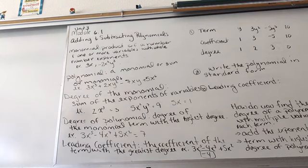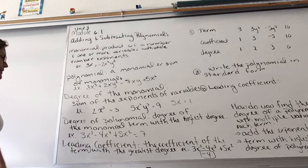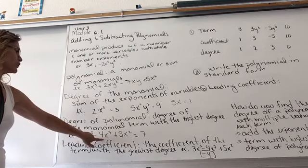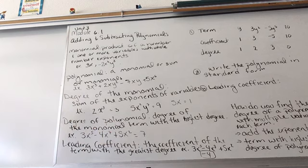Now, degree of a polynomial is the degree of the monomial term at the highest degree. So if we're looking at this, 3x to the fifth minus 4x to the seventh plus 5x squared, the term that has the highest power is right here. So the degree of this polynomial is 7, because it's the highest power.